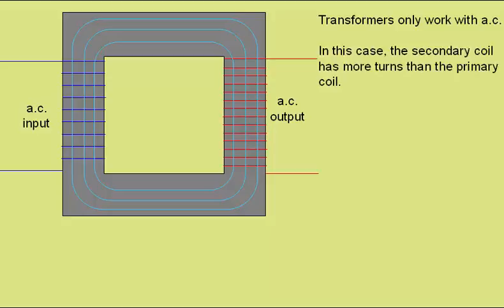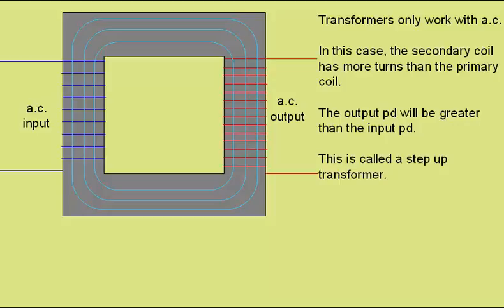In this case the secondary coil has more turns than the primary coil, and so the output potential difference will actually be greater than the input potential difference. This is called a step-up transformer.